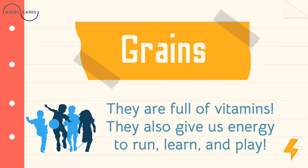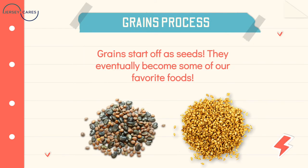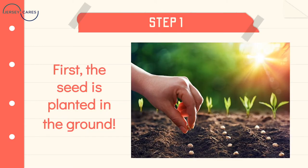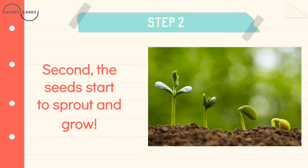We're going to start off with the grains process. Grains start off as seeds and they eventually become some of our favorite foods. For step one, the seed is planted into the ground, as we see in this illustration. For step two, the seed starts to sprout and grow, as we see in this picture.